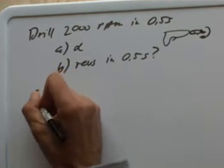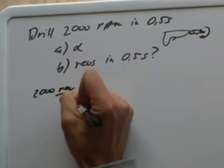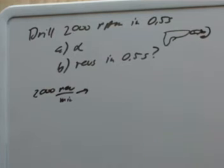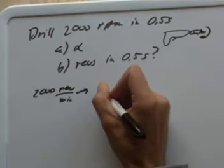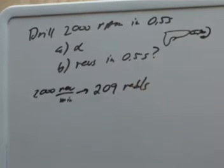The first thing I would do is look at this 2,000 revolutions per minute and just immediately convert it into radians per second. There's another video that shows you how to do that, but for that I get 209 radians per second. So I would just start with that number.